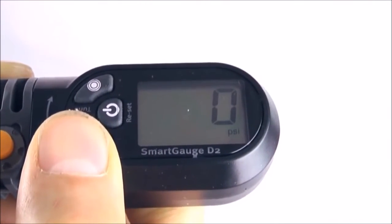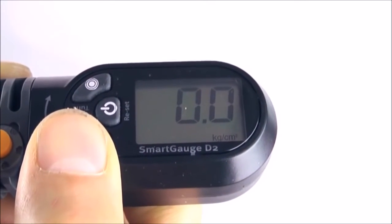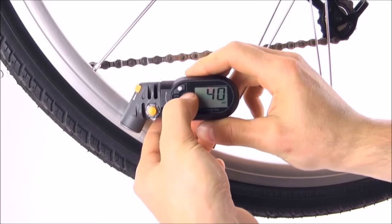The LCD display can be changed to read in psi, bar, or kilogram per square centimeter. A clear button allows multiple quick readings.